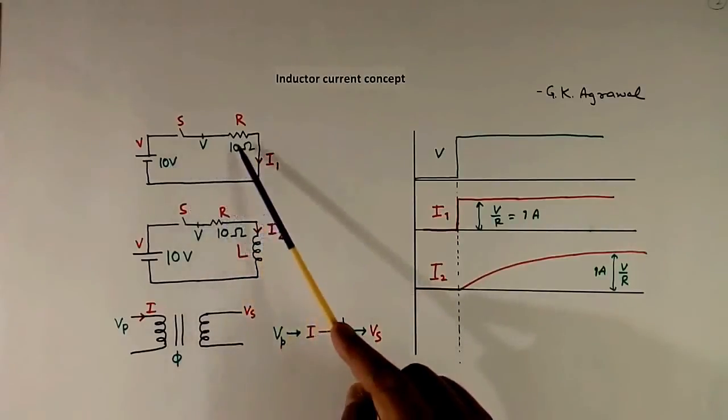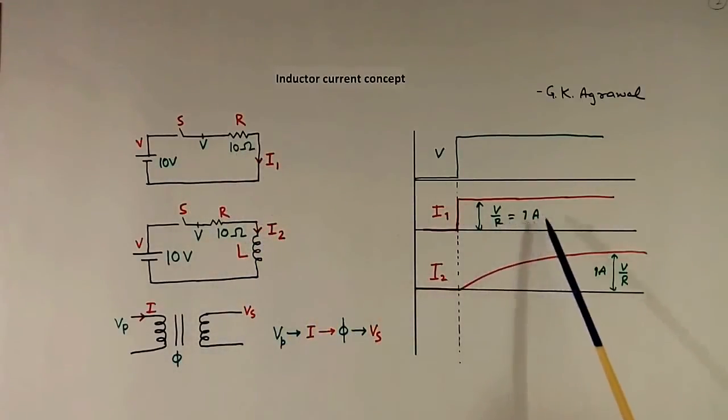Suppose this is 10V and this is 10 Ohm. Then 10 by 10, 1A current will flow.